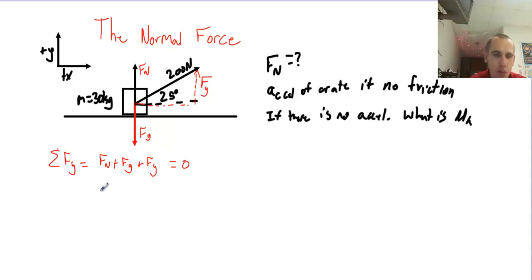So now I'm going to sub in what I know. I do not know Fn, so I'm going to leave it alone. I do know Fg. Fg is equal to mg. And let's actually take a look at what I mean by that. Fg equals mg. Well, m is 30 kilograms.